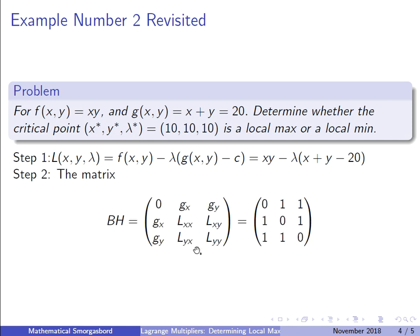Now I calculated this matrix. So we've got a zero. Now the first derivative with respect to x of g(x,y) is one. The first derivative with respect to y is also one. Then again we have one, one down here.